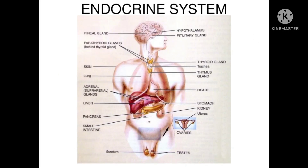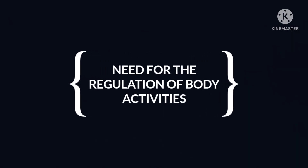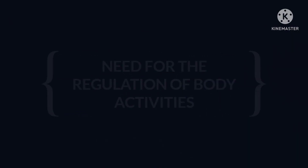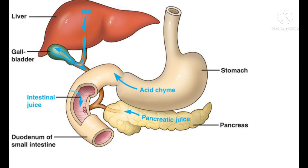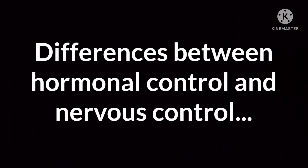Let us begin with the need for the regulation of body activities. As we know, the activities in our body are highly complex and need to be regulated so that every activity takes place at a proper time and in a correct sequence. For example, gastric juice, bile juice, and pancreatic juice should be poured into the food canal only when food is present in it; otherwise there should be no secretion of these three juices. Now we are going to study the differences between hormonal control and nervous control.